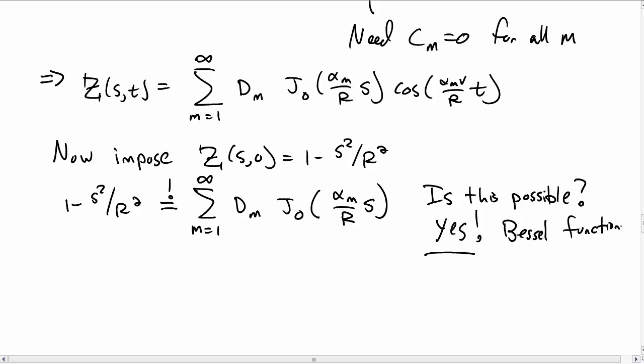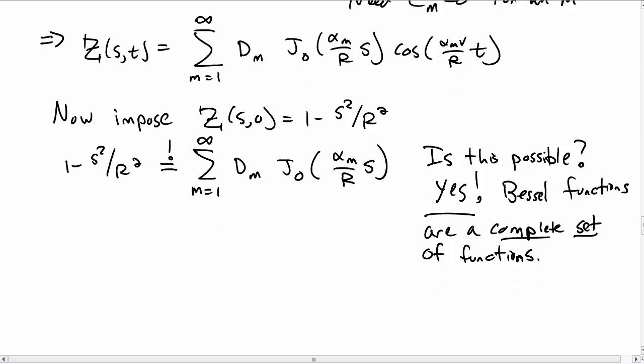So the reason is that Bessel functions are complete functions, namely they're a complete set of functions. So if you recall this idea of orthogonality and completeness, which are properties of functions that are solutions to a Sturm-Liouville problem, then you can always do this for any set of complete and orthogonal functions.